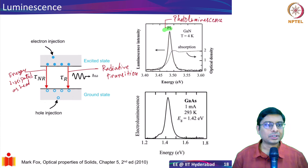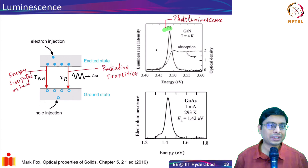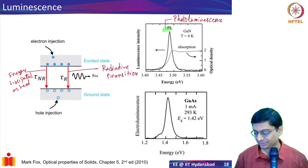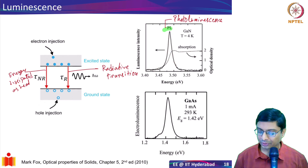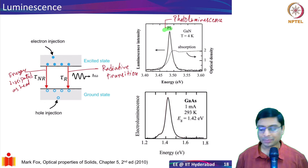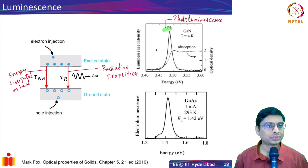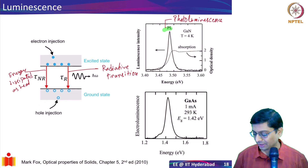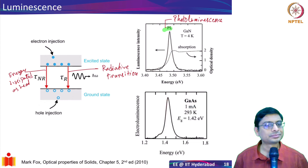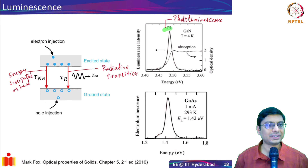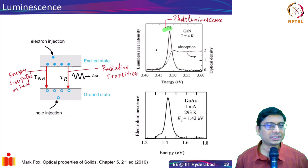Photoluminescence is a useful way to characterize a material. If you inject electrons and holes using current instead, we call it electroluminescence. In that case there is no absorption peak — you simply drive, say, 1 mA of current into the diode and you get emission at the corresponding wavelength. This is essentially what an LED does: input current, output light at a specific frequency.